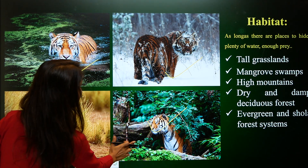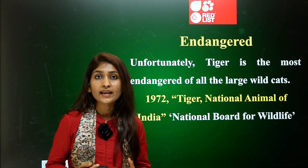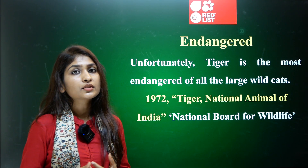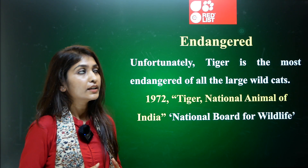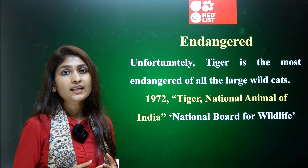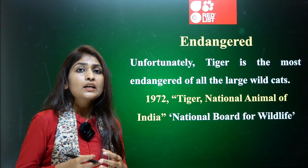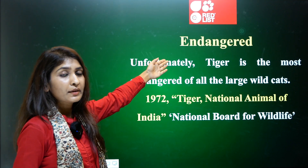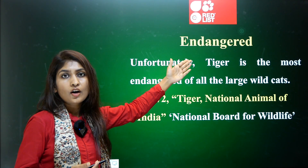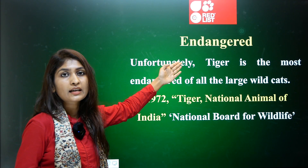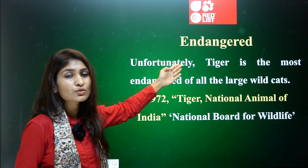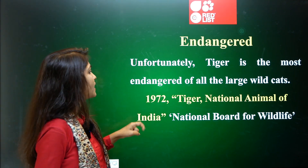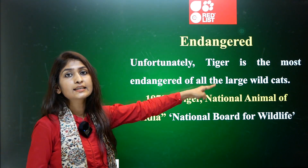The IUCN is a global agency that talks about the status of animals and birds. The tiger species is kept on the endangered list, meaning the tiger population is on the verge of extinction. This is alarming, and it is imperative for governments and local communities to take care of this animal. Unfortunately, the tiger is the most endangered of all the large wild cats.